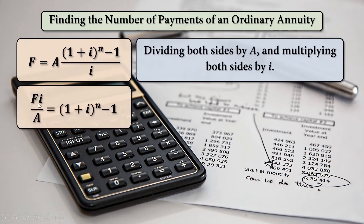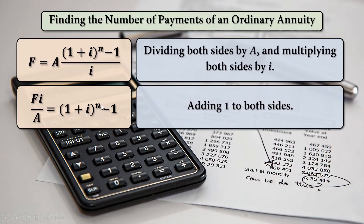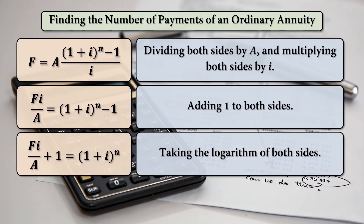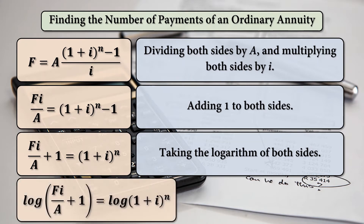The result will be FI over A is equal to 1 plus I raised to N minus 1. Adding 1 to both sides, that is FI over A plus 1 is equal to 1 plus I raised to N. Then taking the logarithm of both sides, the result will be log of the quantity FI over A plus 1 is equal to log of 1 plus I raised to N.